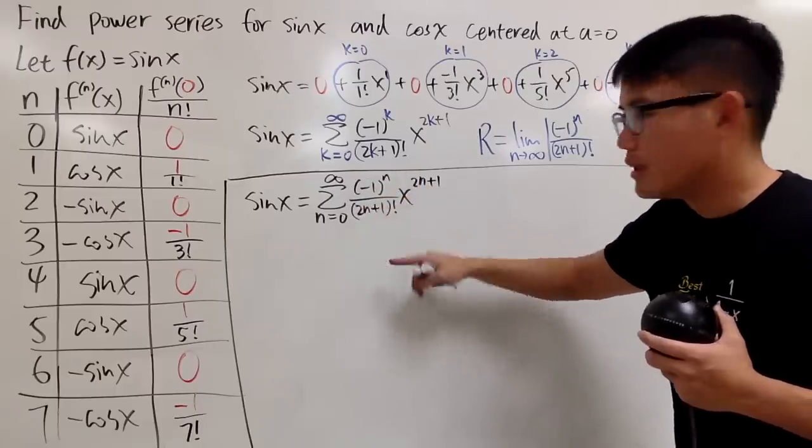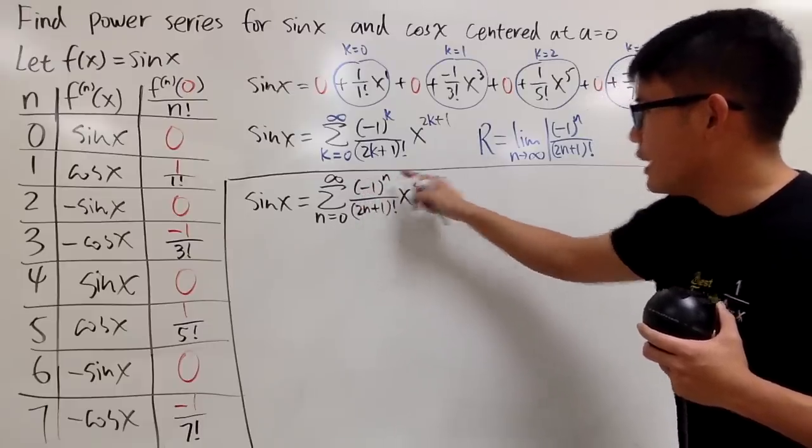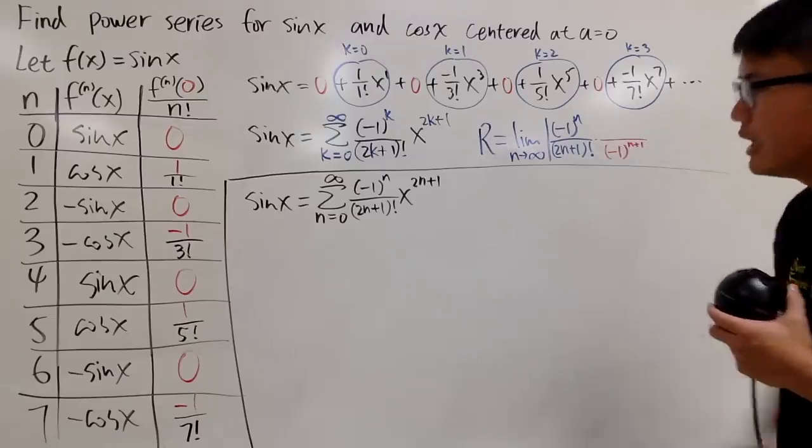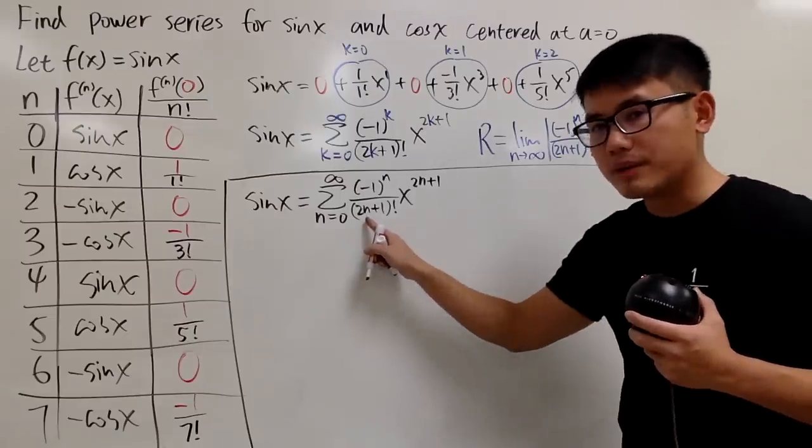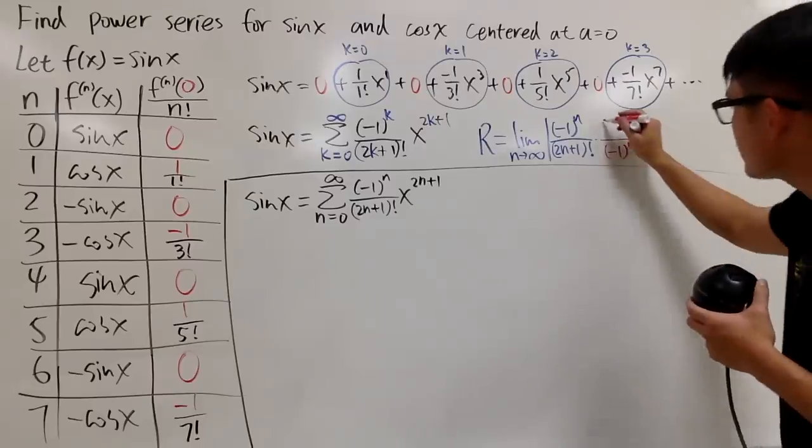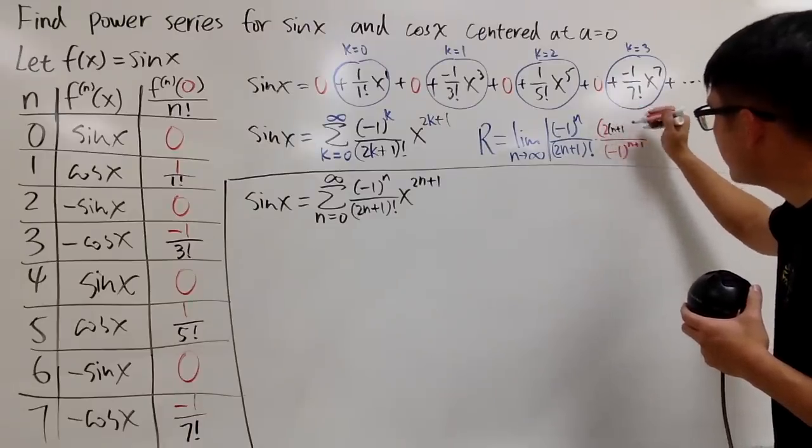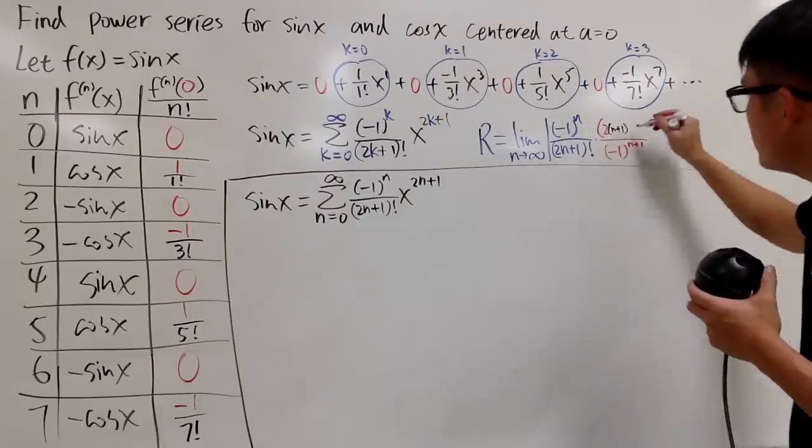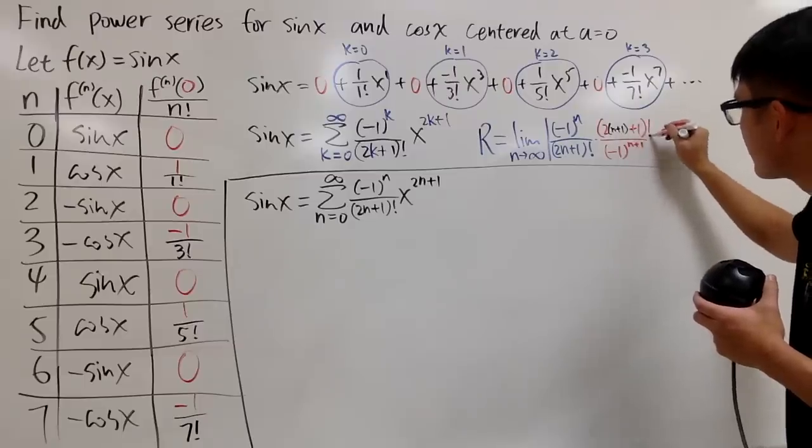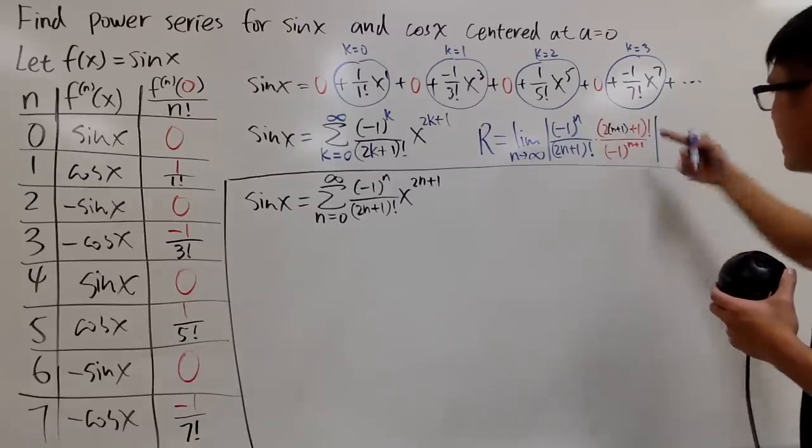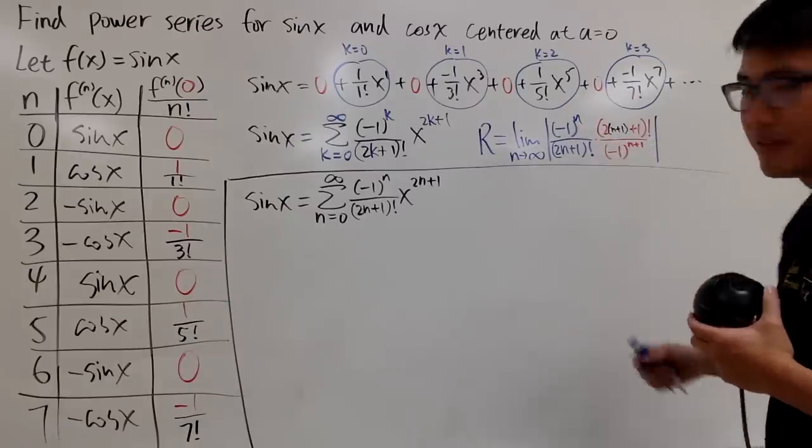and that's the reciprocal of cn plus 1. In other words, put n plus 1 into all the n's here, and do the reciprocal. So, here I will have negative 1 to the n plus 1, this time it becomes in the denominator. And then, I will put n plus 1 into this n. 2 times n plus 1, and then plus 1, and then you do the factorial of that. And the absolute value will kill the negative.